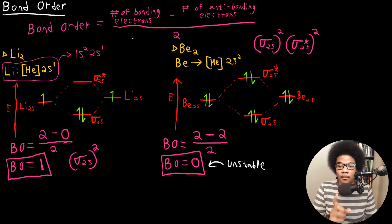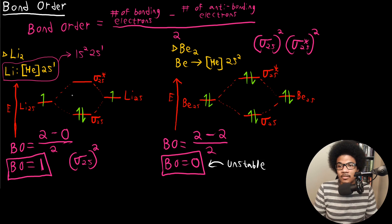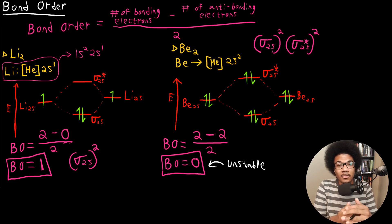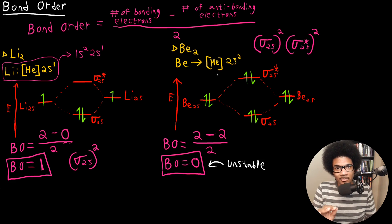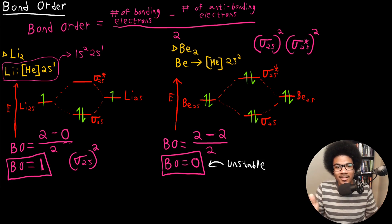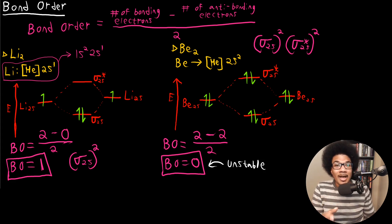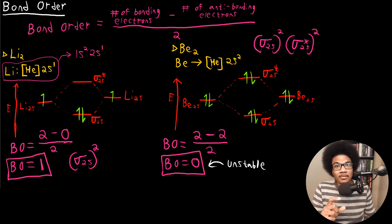So those are two more examples of bond order calculations using homonuclear diatomics. These were still fairly similar to hydrogen, as they only involved s orbitals — 1s and 2s. The next topic to address is what happens when electrons in p-orbitals come together, because they will form different molecular orbitals. That will be the topic of the next video: what happens when p-orbitals get involved in these types of interactions.